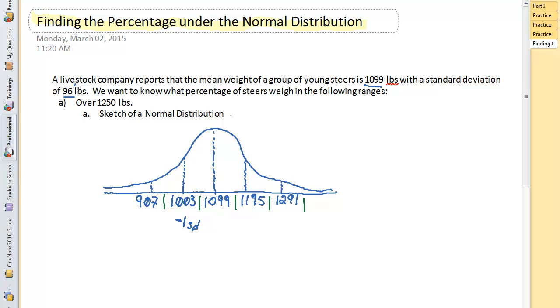So this is my normal distribution for the steers. Now, once I sketch my normal distribution, what I want to do is find my z-score for the cutoff value. That means I'm going to take this 1,250 pounds, and that's basically my cutoff value, and I want to find the z-score for that.